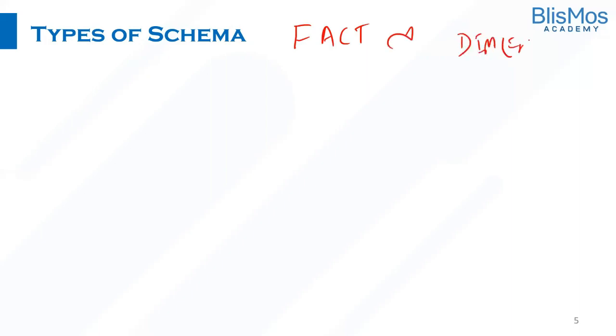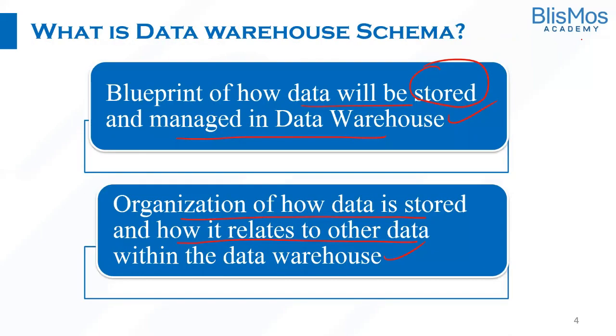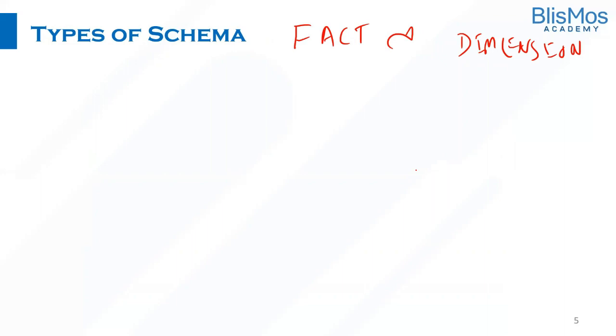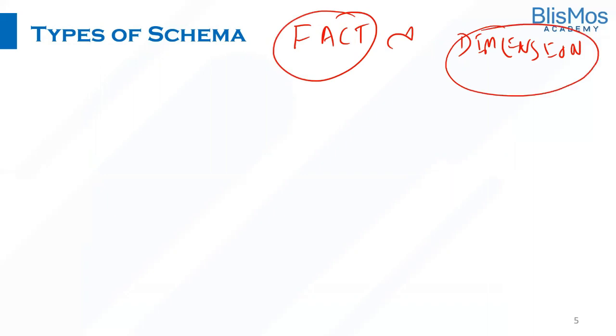If we ask how data is stored in a data warehouse — as covered in our previous video — data is stored as fact and dimension tables. So a data warehouse schema is nothing but how the fact and dimension tables are arranged. Based on how they are arranged, we get different types of schemas.